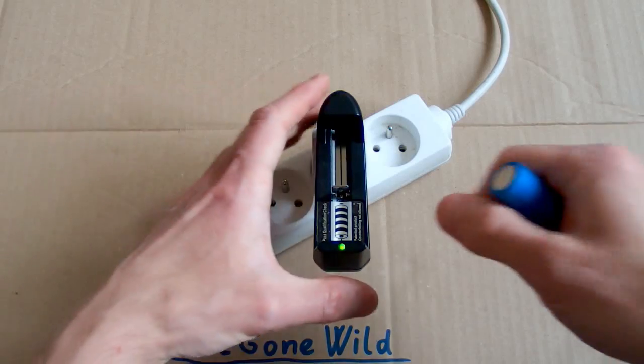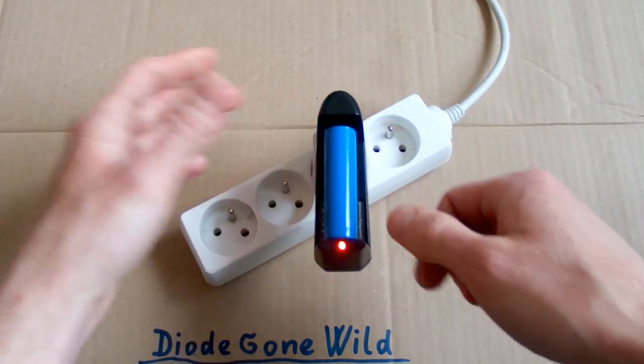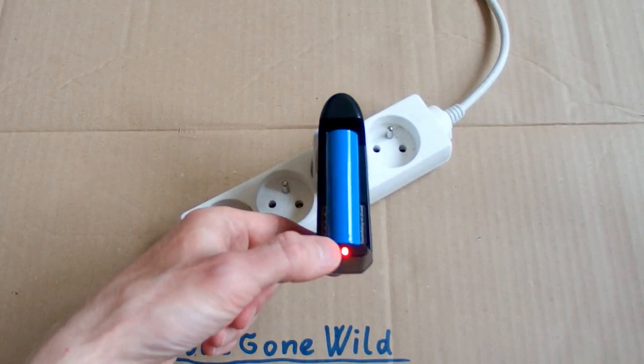With no battery, the light is green. When I put a battery into it, it goes red. And when the battery is full, it turns green again.